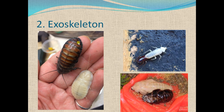In the exoskeleton, the muscles are attached inside — the skeleton is outside and the muscles are inside. This is also a reason this skeleton is called the exoskeleton. The exoskeleton has no ability to grow; it is dead. So when the animal grows, it first sheds its old exoskeleton.